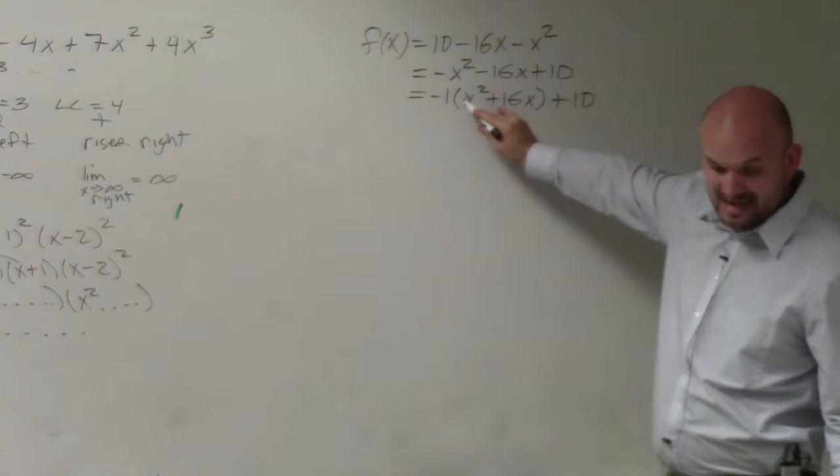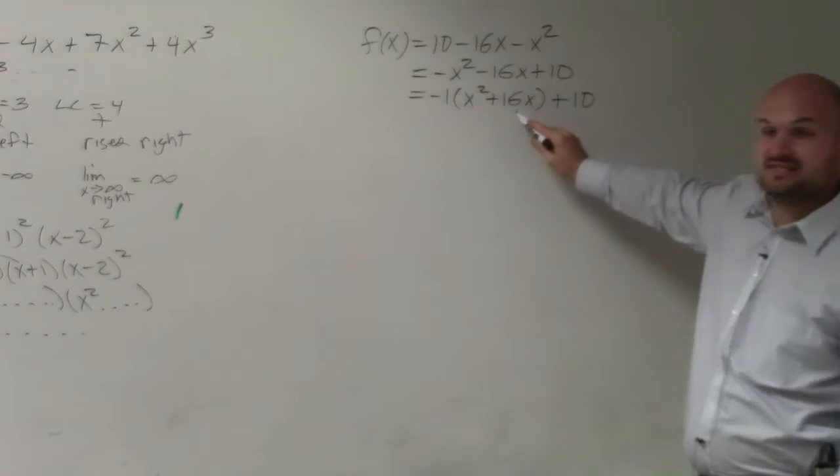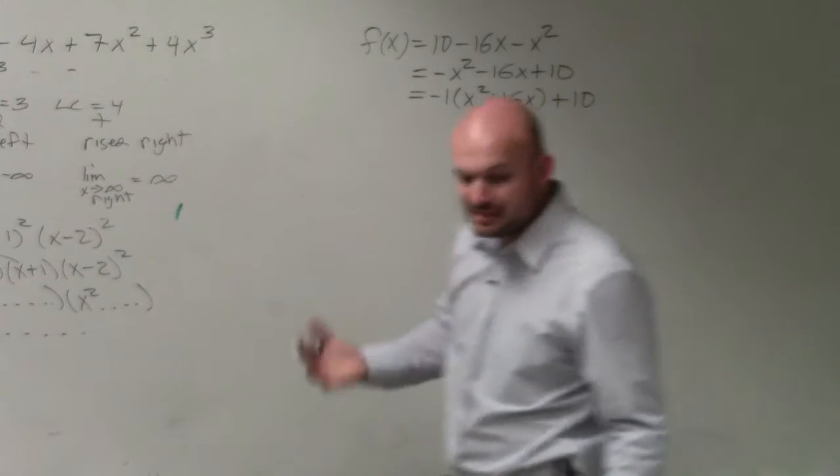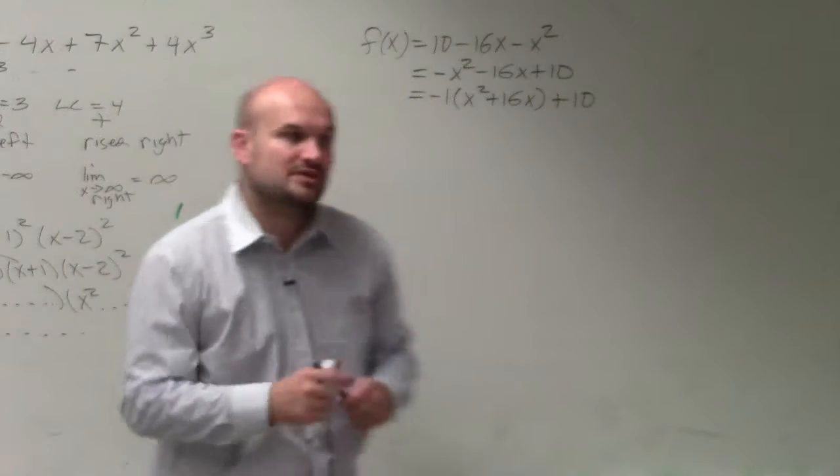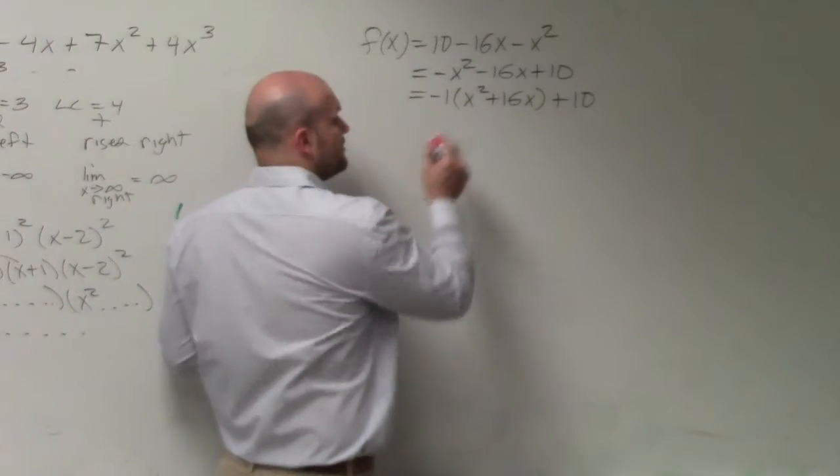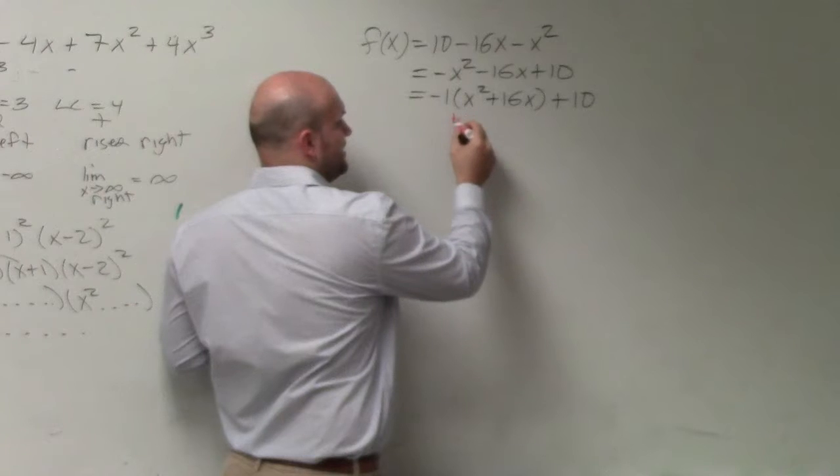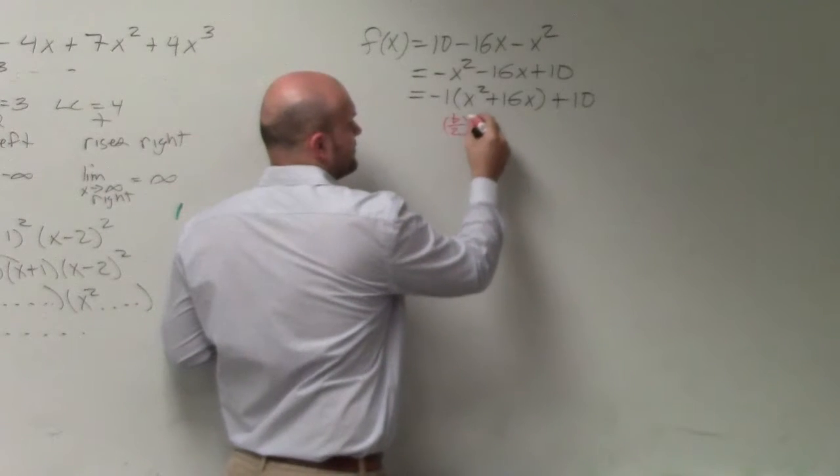Now you have an a that's 1 and a b that's 16. So to complete the square, all you're doing is creating a perfect square trinomial. To create a perfect square trinomial, you do b divided by 2 squared.